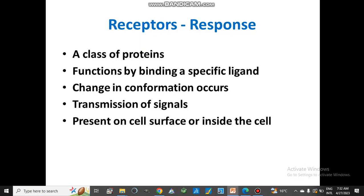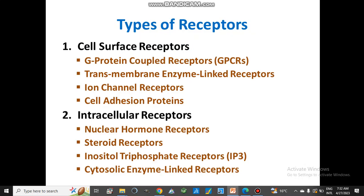Receptors are present inside the cell, outside the cell, or on the surface of the cell. Different types of receptors include: number one, cell surface receptors. These are present at the cell surface — membrane-bounded proteins. These include G-protein coupled receptors, known as GPCRs, which are very important in the body. Also transmembrane enzyme-linked receptors — enzyme-linked receptors are of two types, some transmembrane and some cytosolic — plus ion channel receptors and cell adhesion proteins.